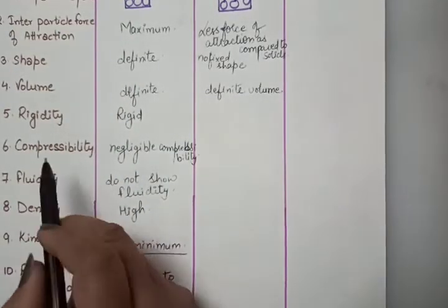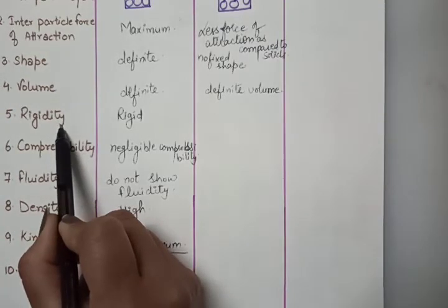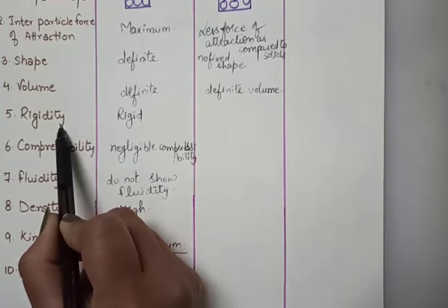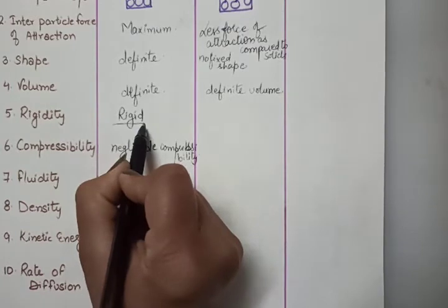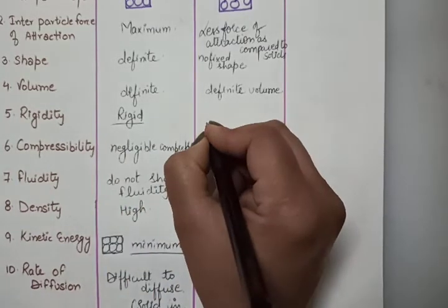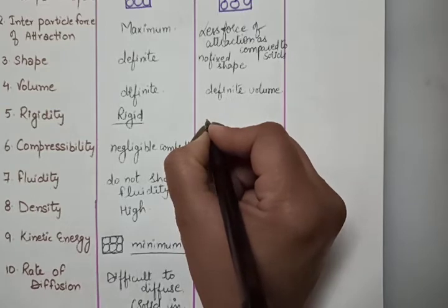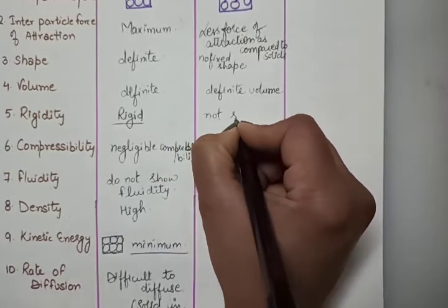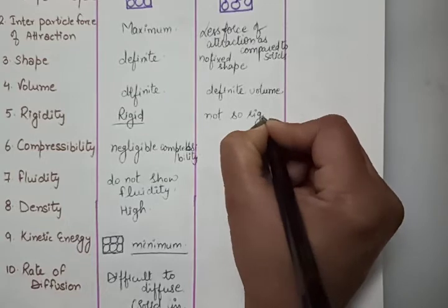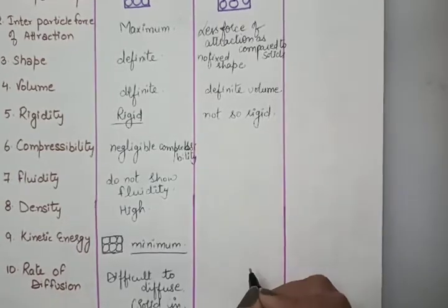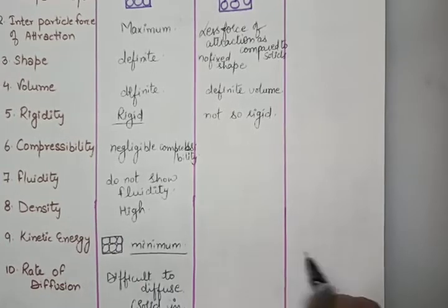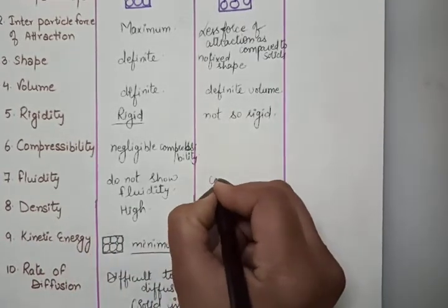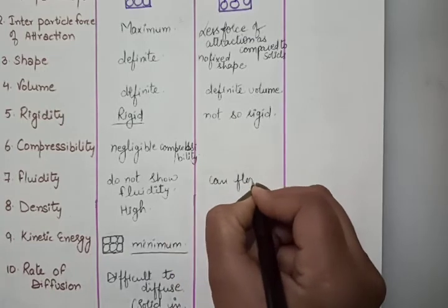What about the rigidity of liquids? Solids are rigid. Liquids are not so rigid — they do not have any definite boundary. Are they able to flow? Yes, they show the property of fluidity — liquids can flow.